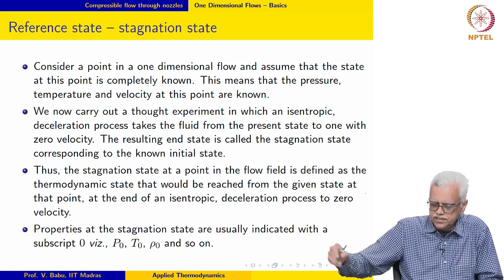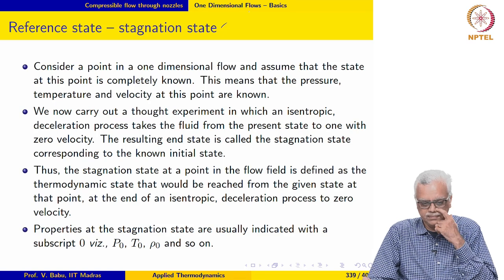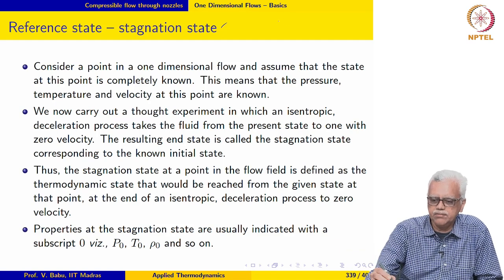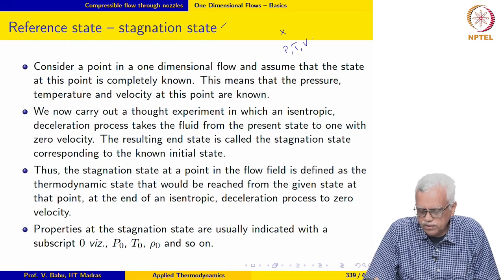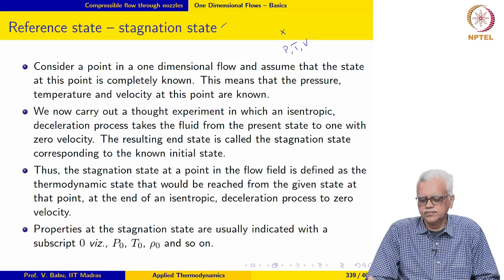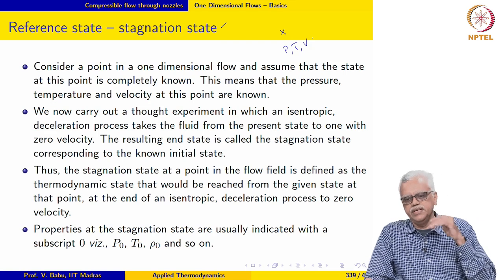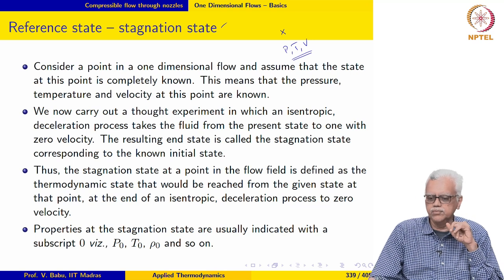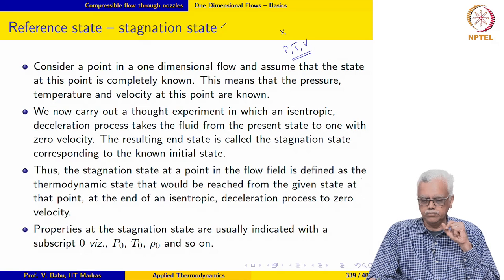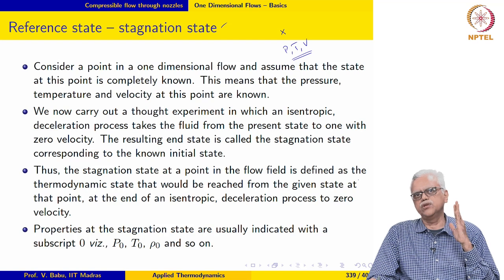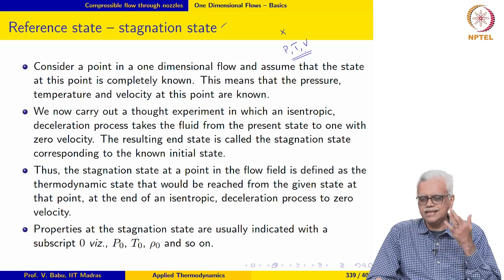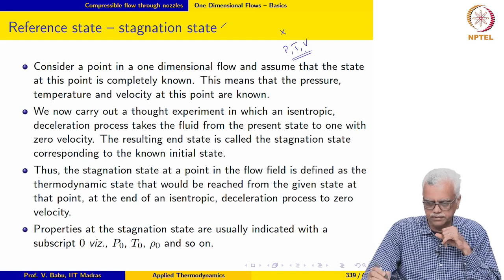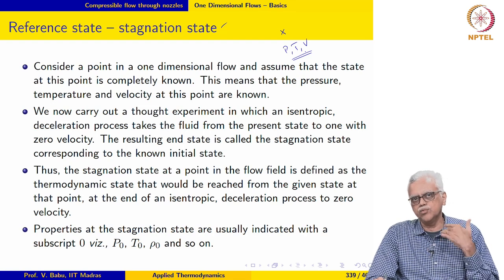The next reference state is the stagnation state. Consider one-dimensional flow where the state at a location — pressure, temperature, and velocity — is completely known. We carry out a thought experiment in which we take the fluid from this state to one with zero velocity by means of an isentropic process. The resulting state is called the stagnation state corresponding to that original state — this point is very important.